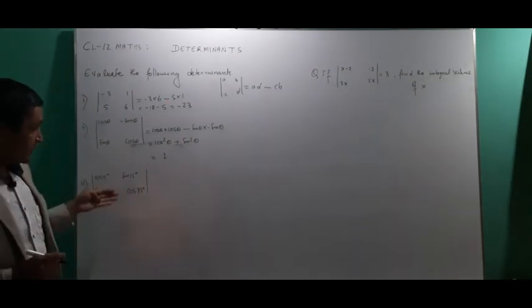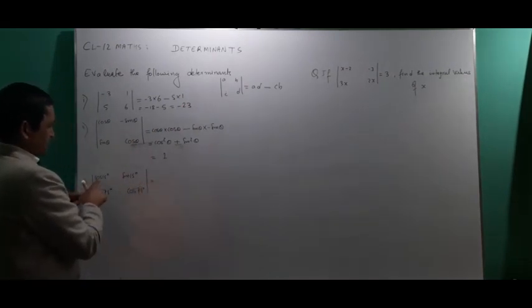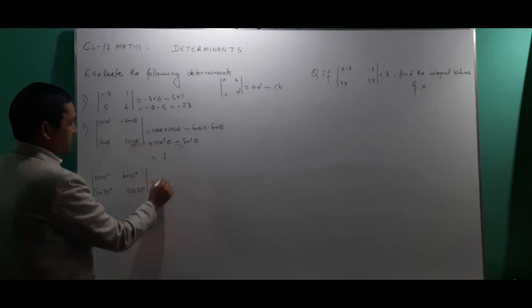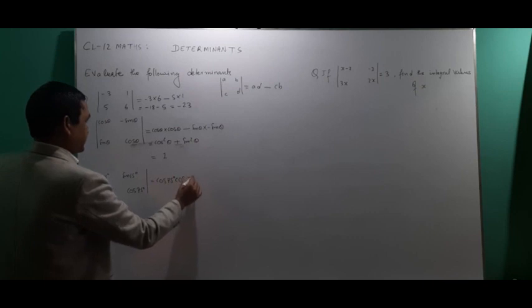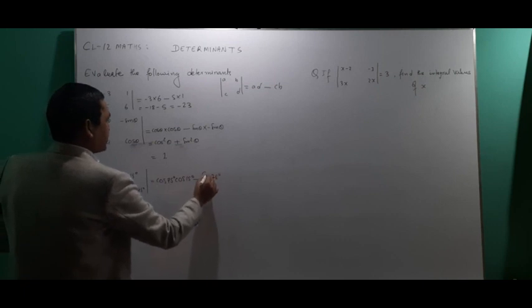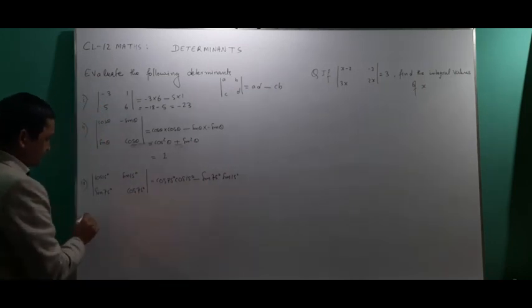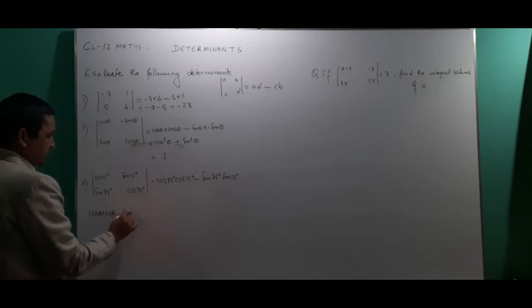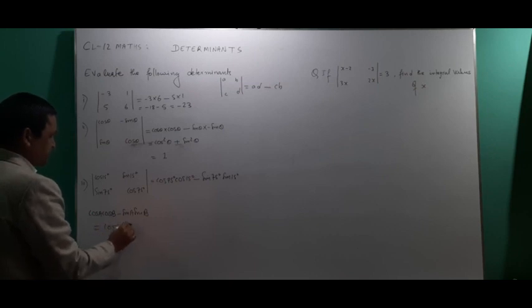Now we'll evaluate this one using the same formula. We have cos 75 degree times cos 15 degree, minus sin 75 degree times sin 15 degree. For this, we have a formula: cos A cos B minus sin A sin B equals cos of A plus B.